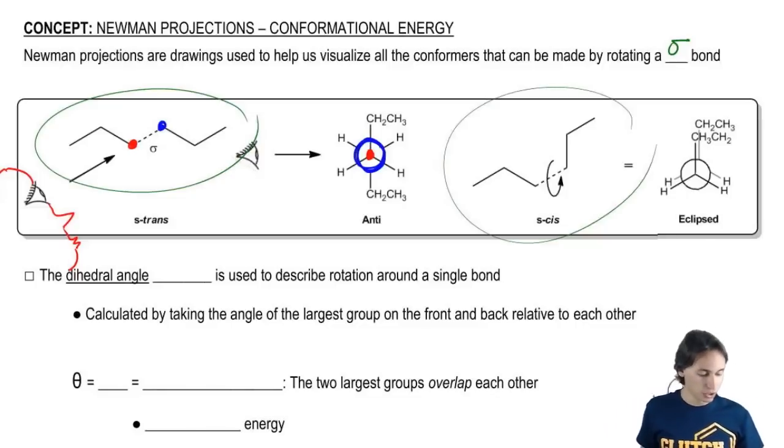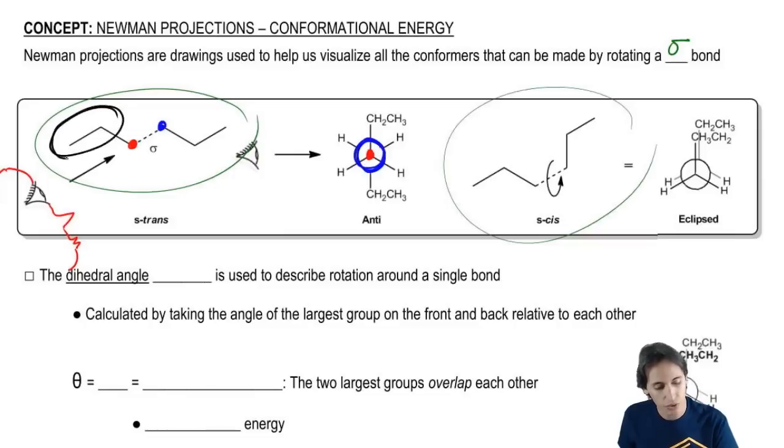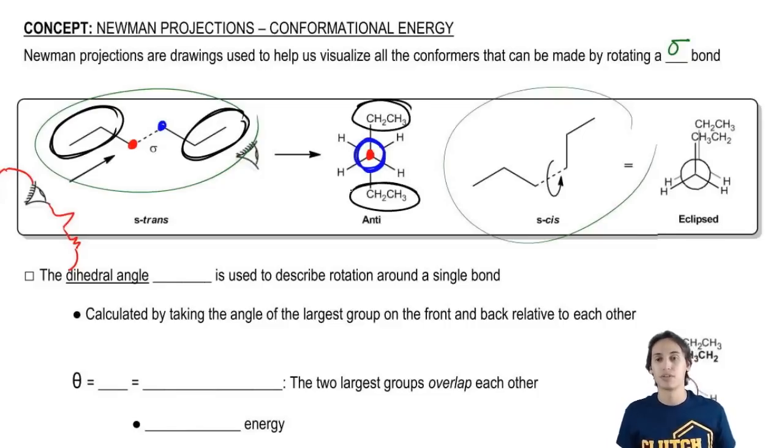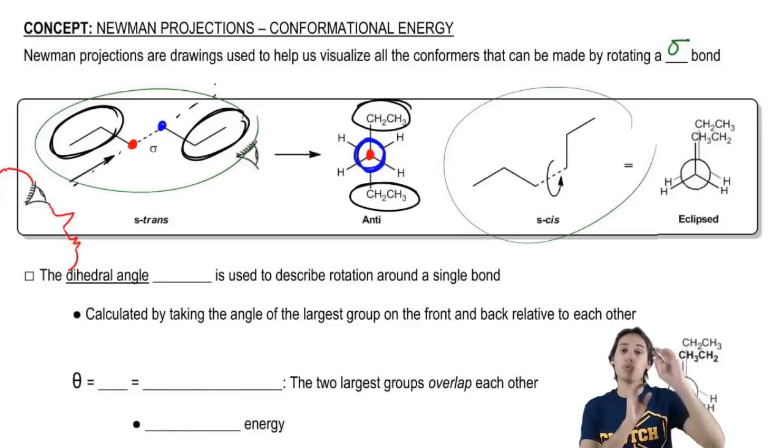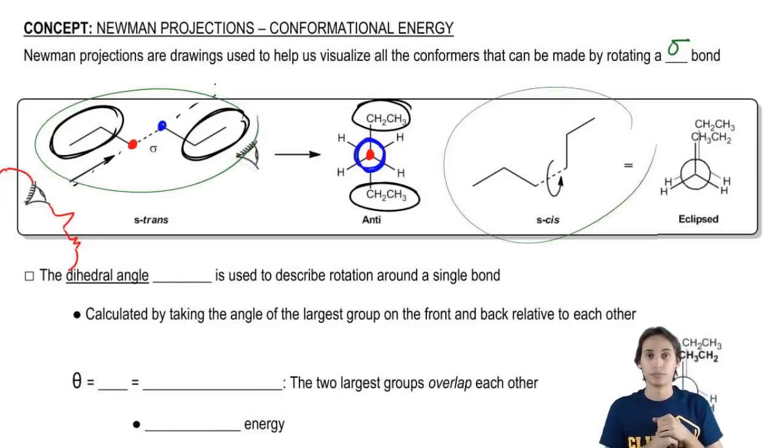So basically if you were to look down that bond, what you would see is that your big groups, this ethyl group here and this ethyl group here, would be on opposite sides of these carbons. Because as you can tell, if you were to draw your dotted line, they're on opposite sides of the fence. So basically they'd be really far away from each other.